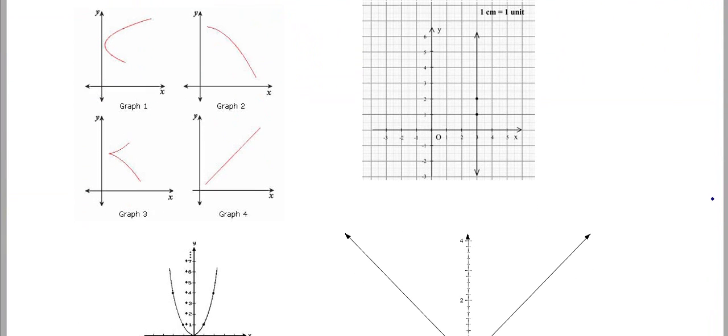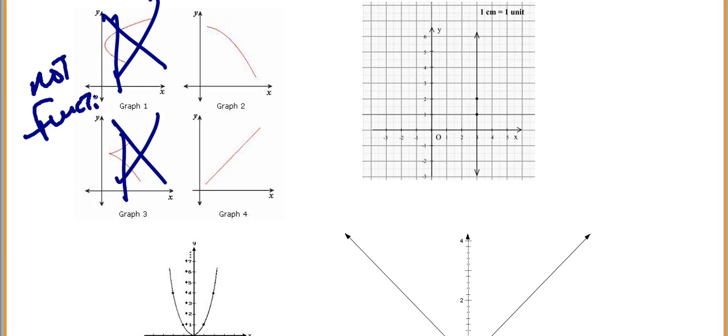So let's look at some more examples. Here, we got four graphs. Which of these four graphs is a linear function? Well, first of all, let's find out which ones are functions. Well, I drew my vertical line. These fail the vertical line test because it intersects more than once. So graph one and three are not functions, so we are not even going to look at those anymore.